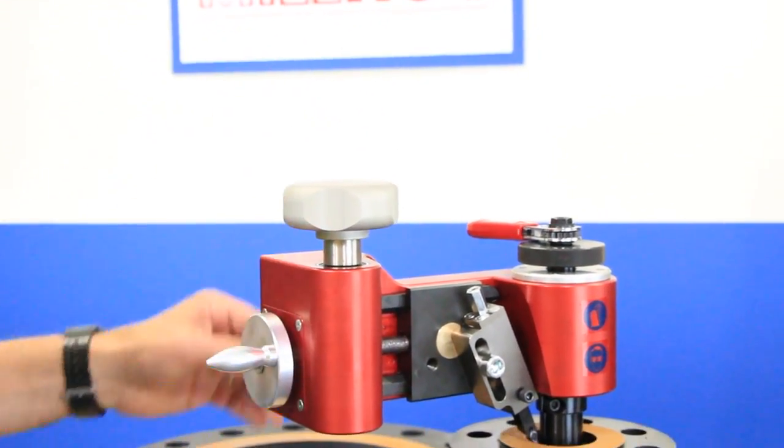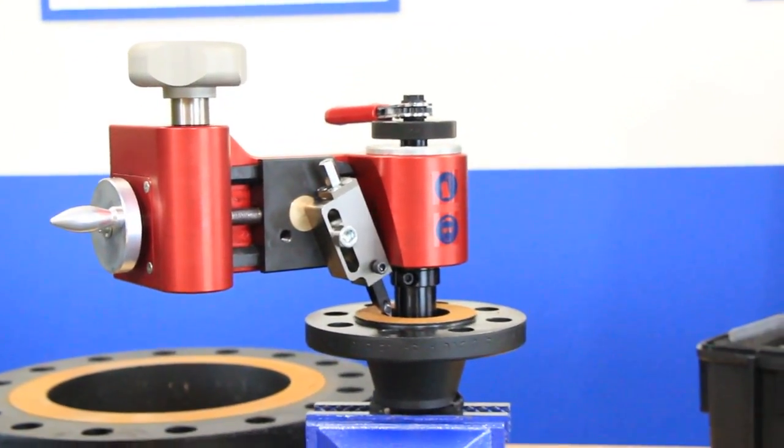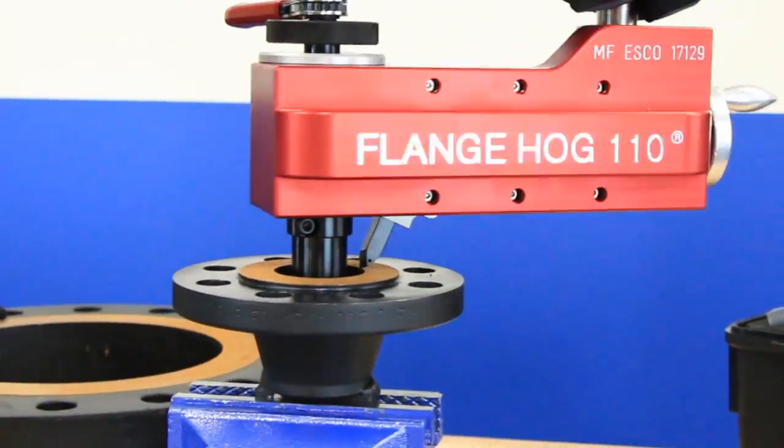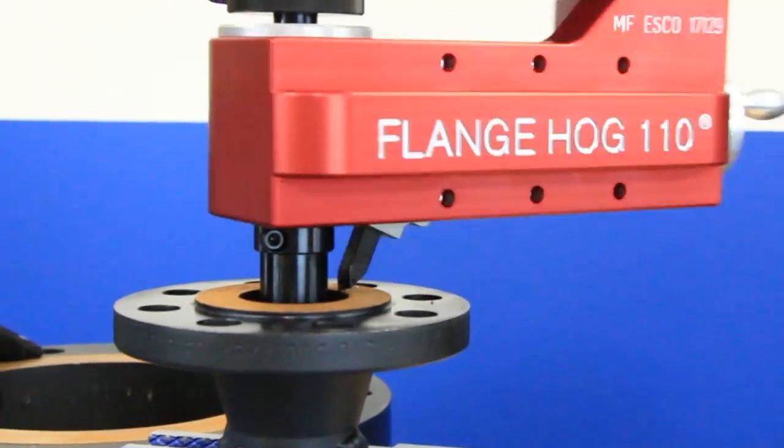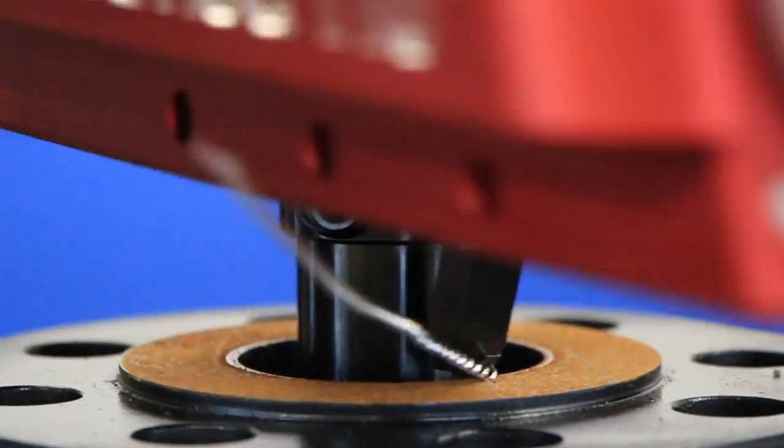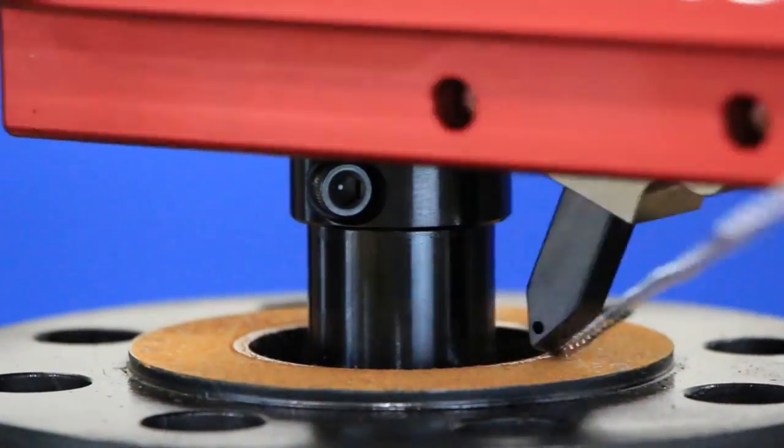Once the knob is re-engaged, the tool is ready to face. To face the flange, hold the gray knob and swing the tool counterclockwise in a smooth motion. Be sure to keep your wrist locked as any non-coordinated movement with the tool will cause imperfections and gasket seat grooves.